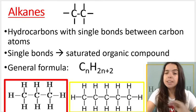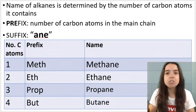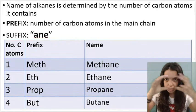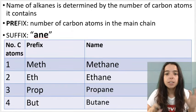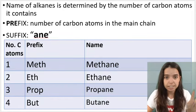Naming straight chain alkanes is pretty straightforward. All you need to do is count the number of carbons in your chain and you use the prefixes as listed on the screen.